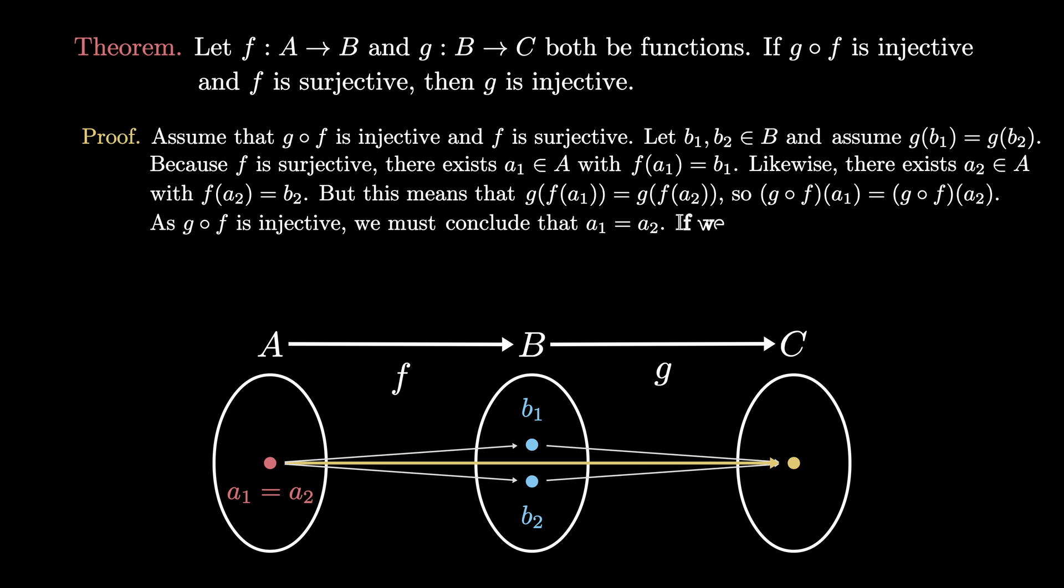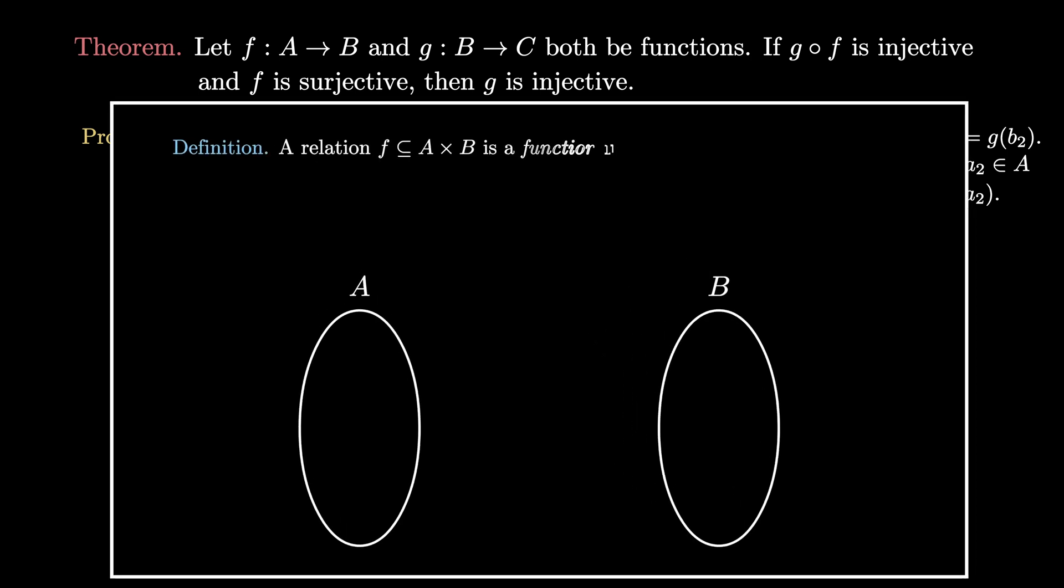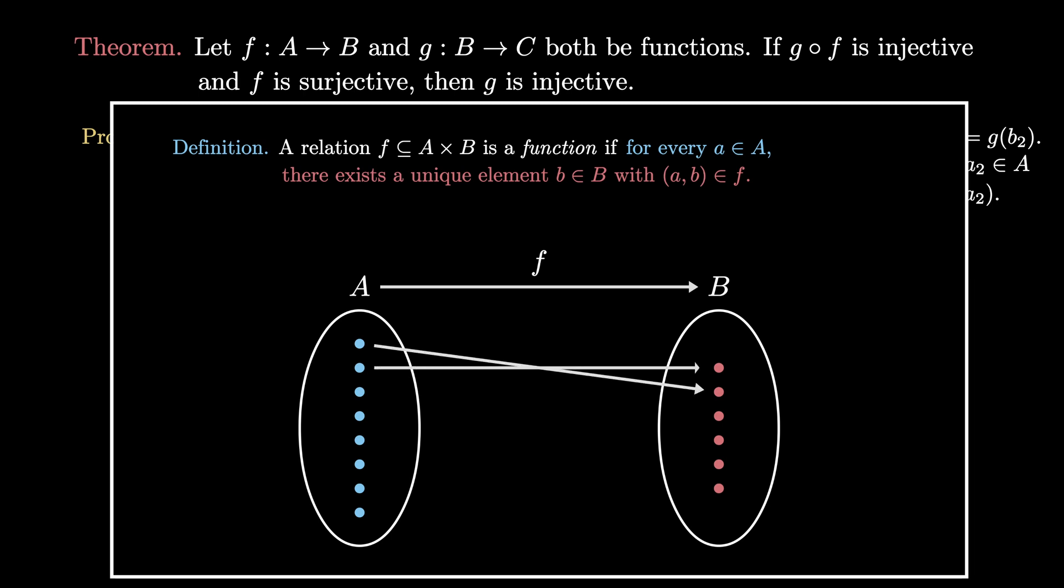If we let a represent the equal elements a₁ and a₂, then we see a problem when we remember the definition of a function. Recall that a relation is a function if every element in the domain A is paired uniquely with an element of the codomain B. That is, every element in A maps to one and only one element in the codomain B.